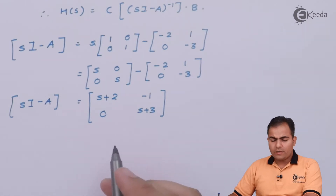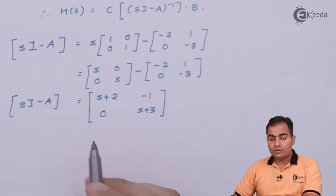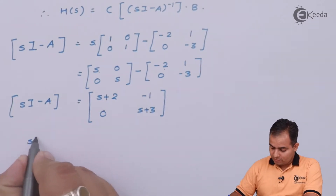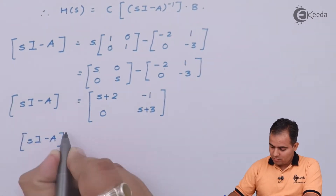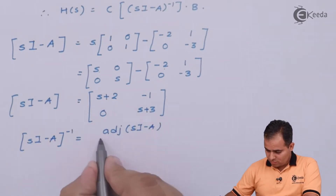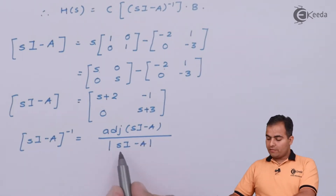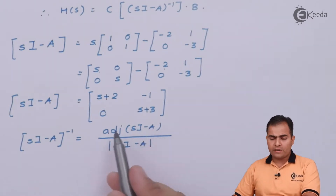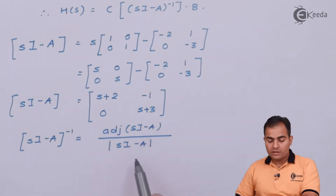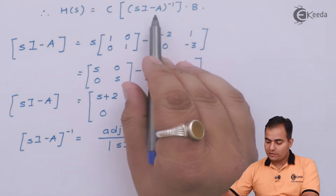The formula for (sI minus A) inverse is: adjoint of (sI minus A) divided by the determinant of (sI minus A). We will first find the determinant and then the adjoint, and substitute both values into the transfer function equation H(s).